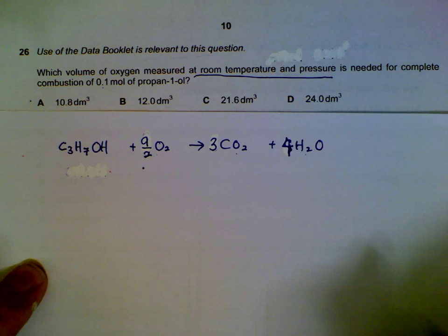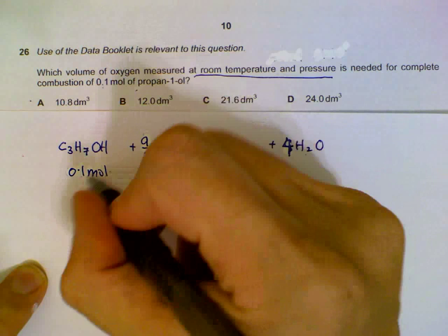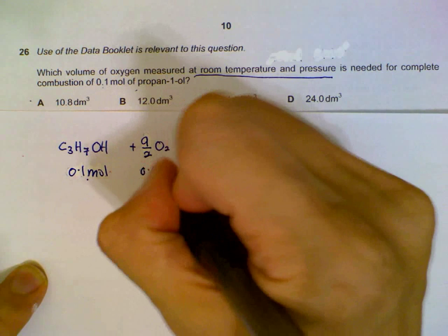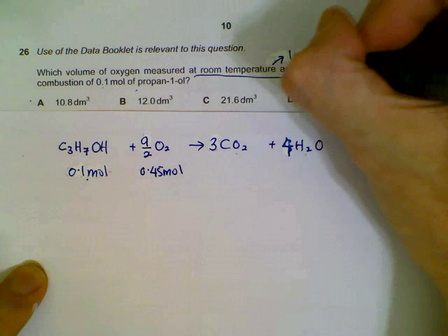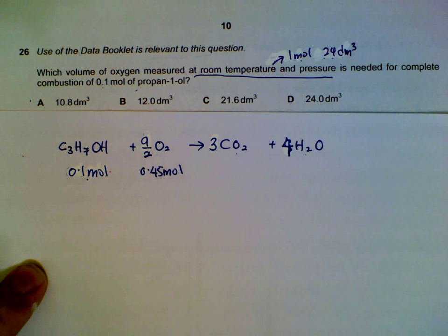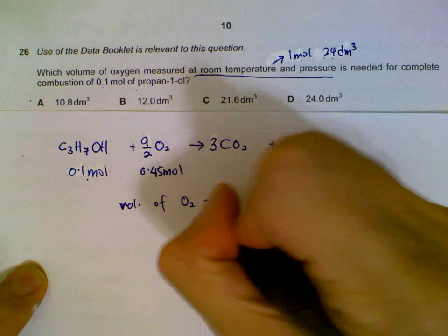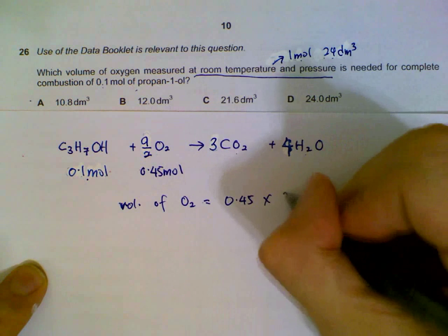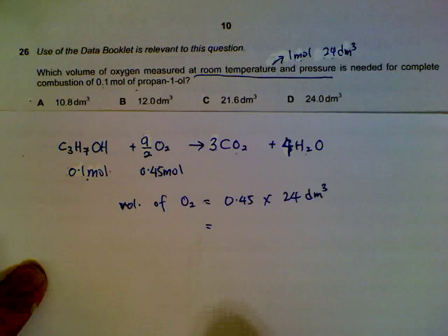With 0.1 moles of propanol, we multiply 0.1 by nine-halves to get 0.45 moles of oxygen required. At room temperature and pressure, one mole of gas occupies 24 dm³. So the volume of O₂ equals number of moles multiplied by 24 dm³.